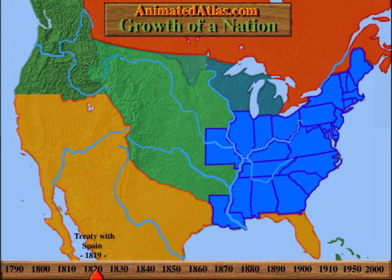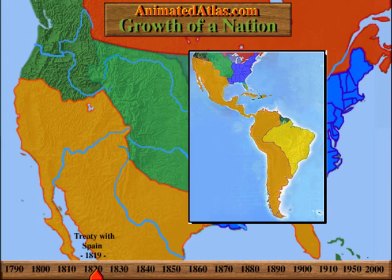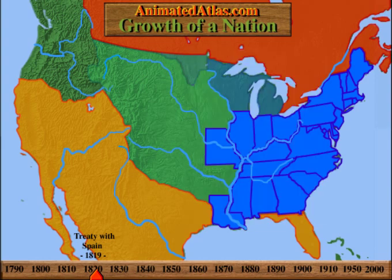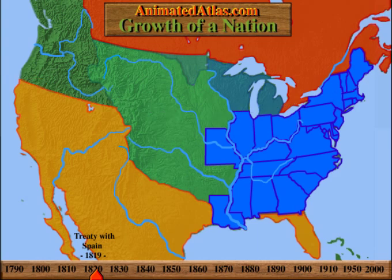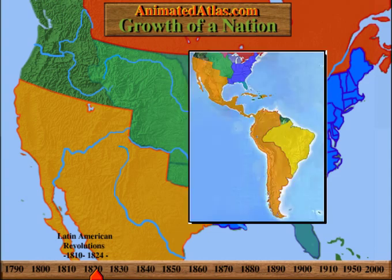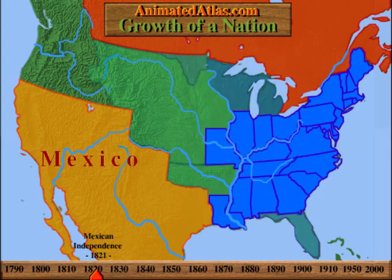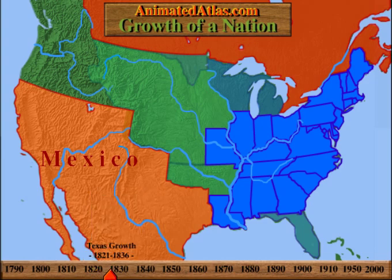Spain, a waning power, held the land to the west and south of the new nation, including much of Central and South America. In a treaty of 1819, Spain agreed to the 42nd parallel as a limit to northern expansion, and for certain adjustments, she ceded Florida to the United States. As this treaty was signed, Latin America was in revolt. All the South American nations were independent by 1824. Mexico achieved independence in 1821, and unlike Spain, Mexico opened her borders to American settlers. Texas was colonized in 1821.